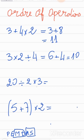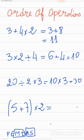Here we have only division and multiplication, and we said they stand at the same rank. So neither is stronger than the other — we go from left to right. So 20 divided by 2 is 10, times 3, which is 30. If we started by performing the multiplication first, 20 divided by 6 is not 30. So the rule is always to start from left to right.